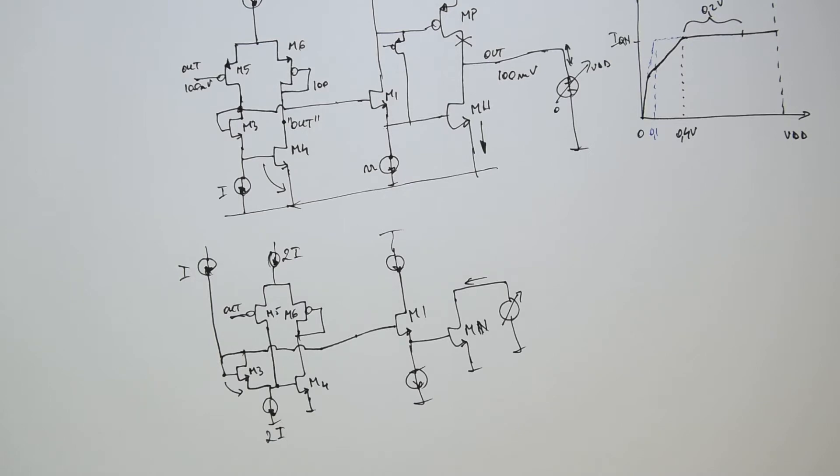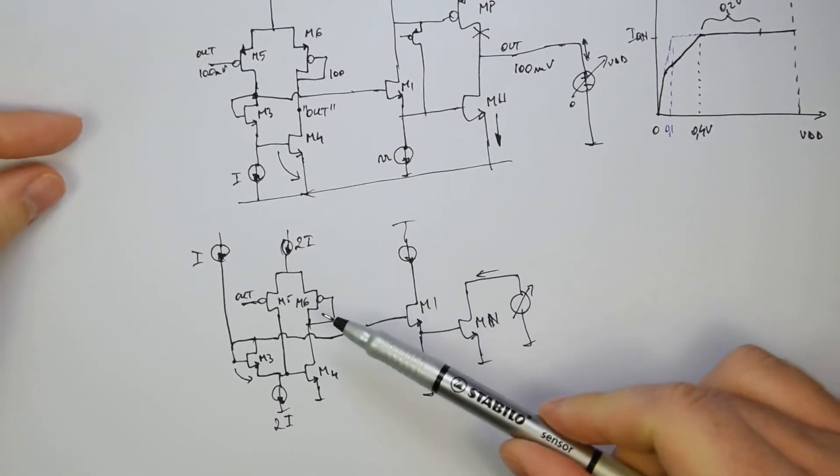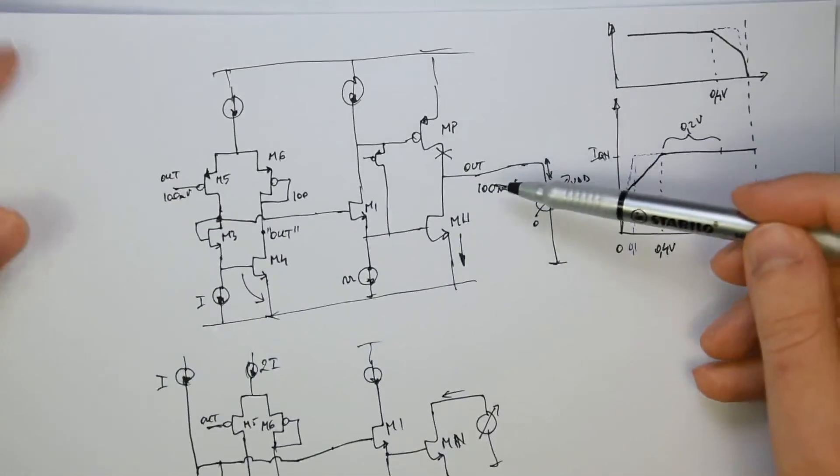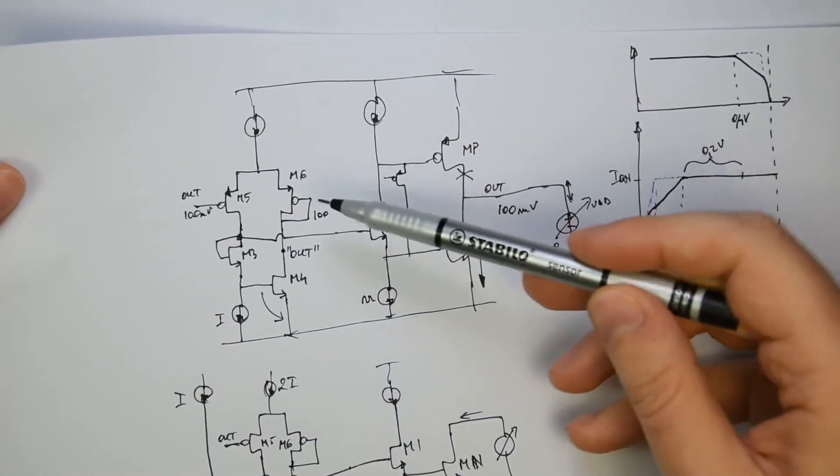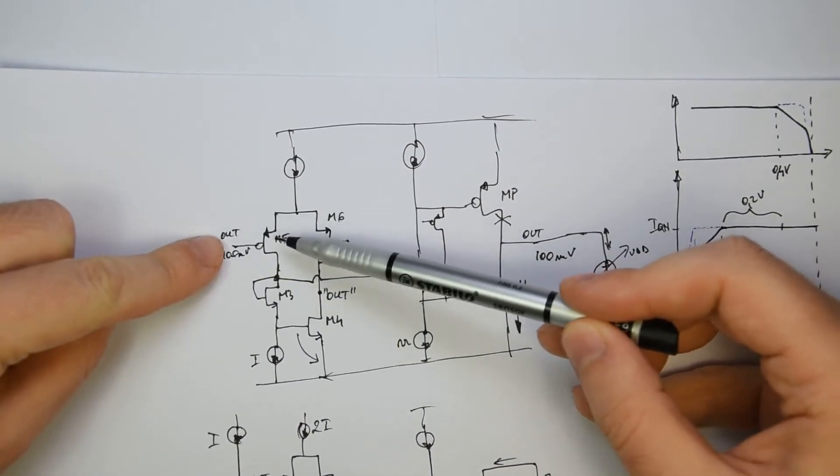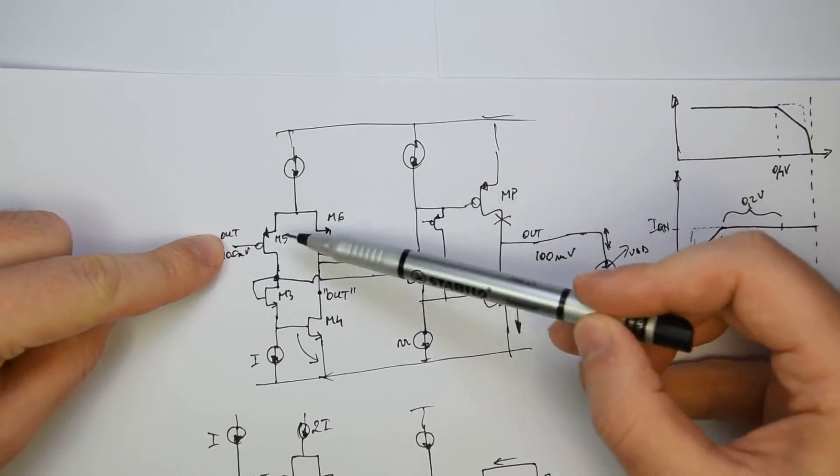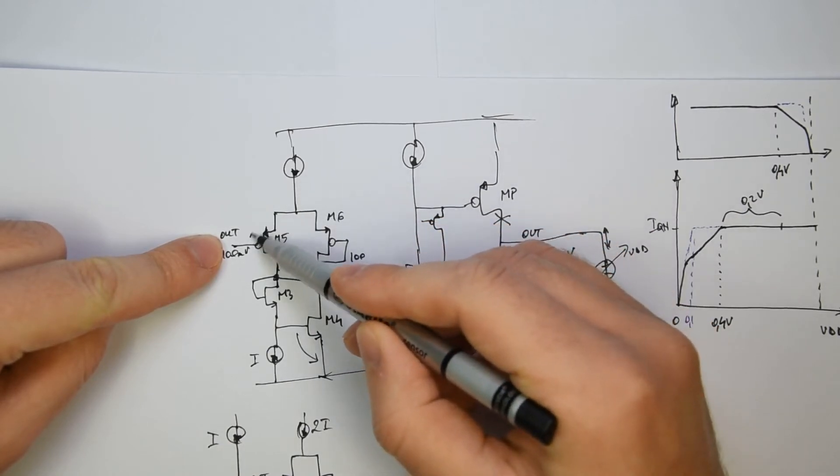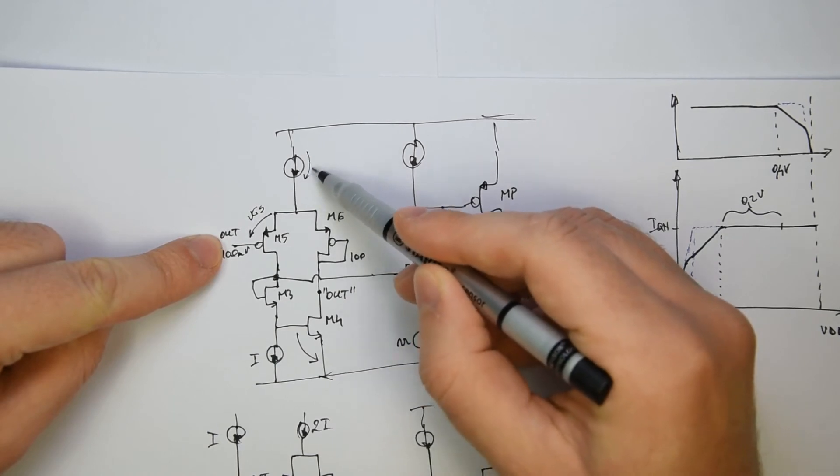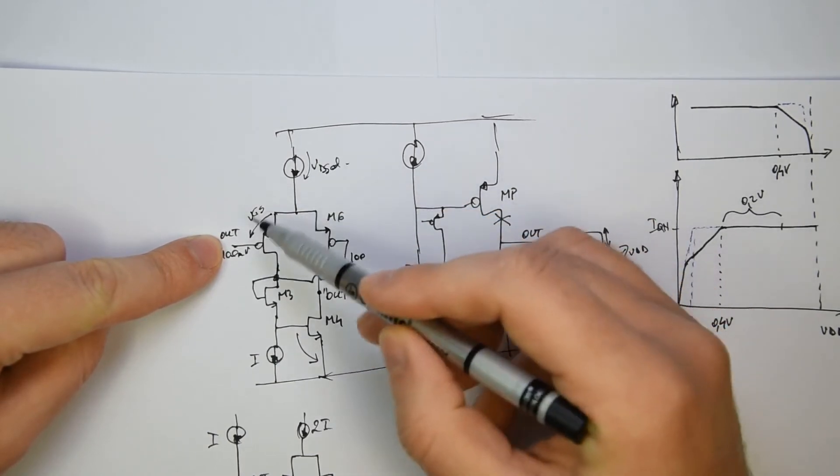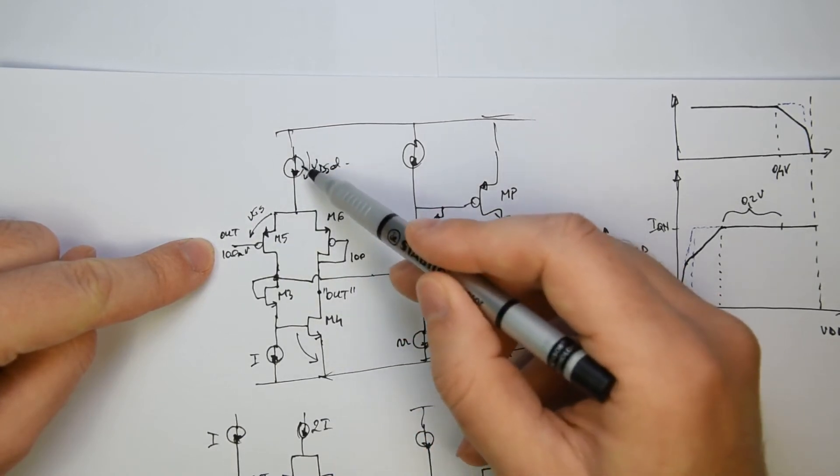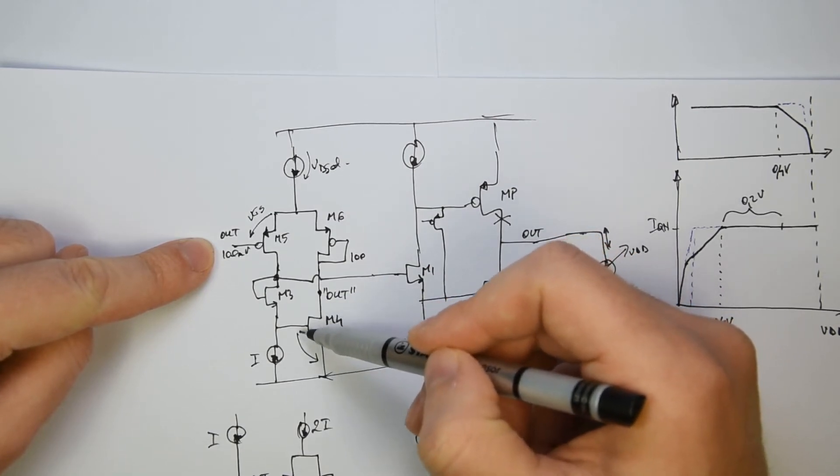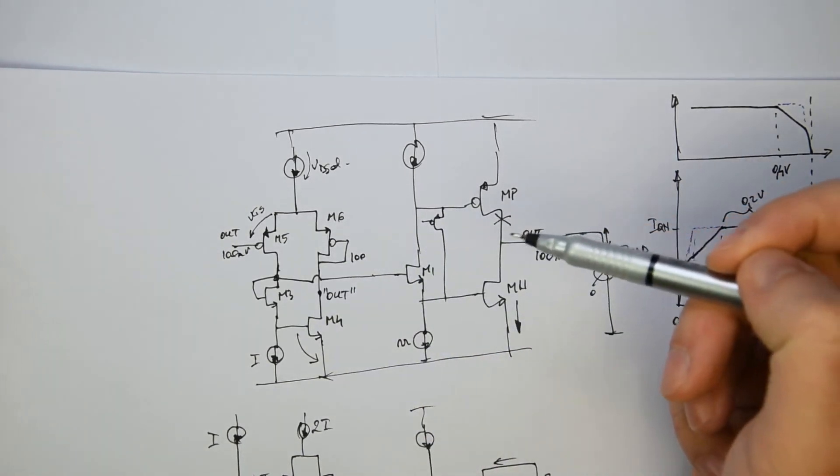Another improvement that you can do is actually to solve the same structure has a slight problem if the voltage is too high. Because if the voltage is too high again the gate of M5 will go to supply. As you can imagine, you don't have enough room to the top current source. Because here you need a VGS and here you need a VDSAT. If you are not having enough room, then this current will be off. If the current is off, as you can imagine, this voltage is going down. There is no more VGS. Everything collapses.